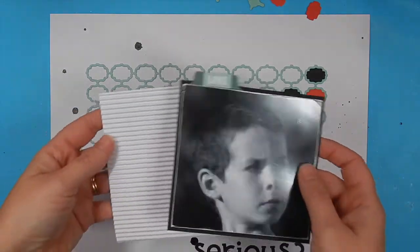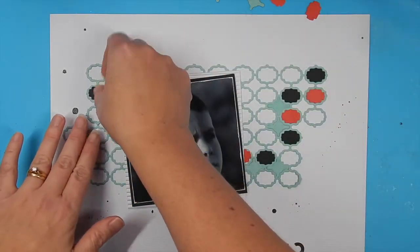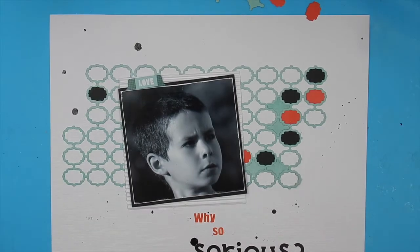I've matted my photo onto black cardstock and then again onto a piece of white corrugated cardboard and now I'm going to continue to position around my photo.